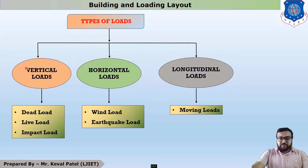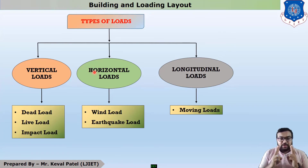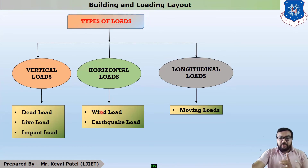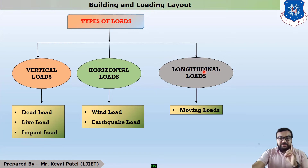The first load is Vertical Load. The second load is Horizontal Load. In Horizontal Load, there are two main types of load to consider while designing any RCC Building: the first load is Wind Load and the second one is Earthquake Load. The last load is Longitudinal Load, and in Longitudinal Load there is one load called Moving Load.